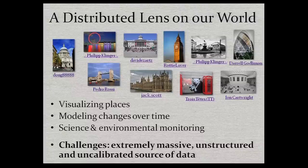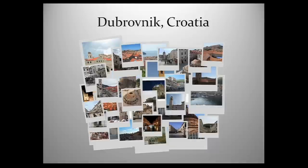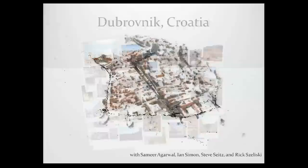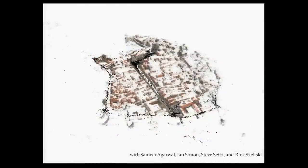The real problem is that this is an extremely massive and uncalibrated data source — millions of different cameras with unknown viewpoints and unknown times. How are we going to make sense of all this data? We need new computer graphics and computer vision techniques. Here's an example: a set of photos scraped from Flickr of the beautiful medieval city of Dubrovnik in Croatia.